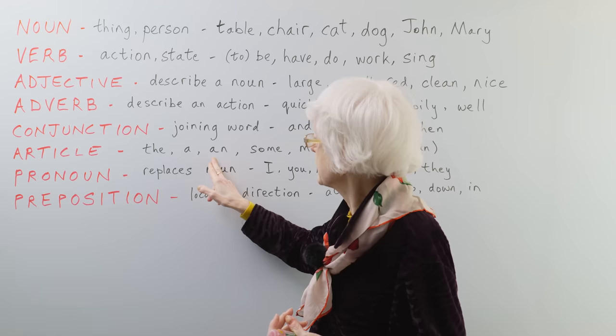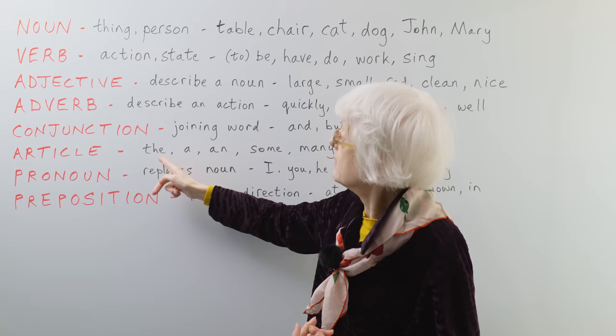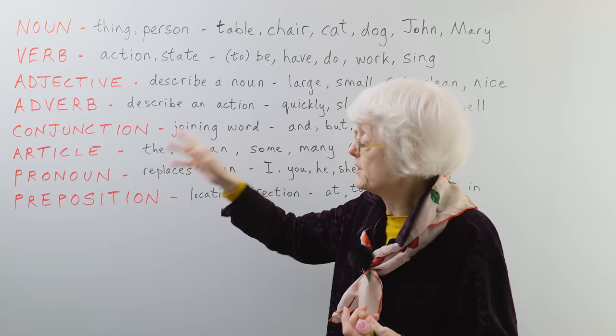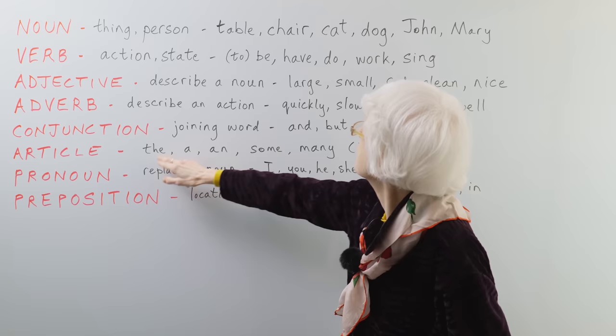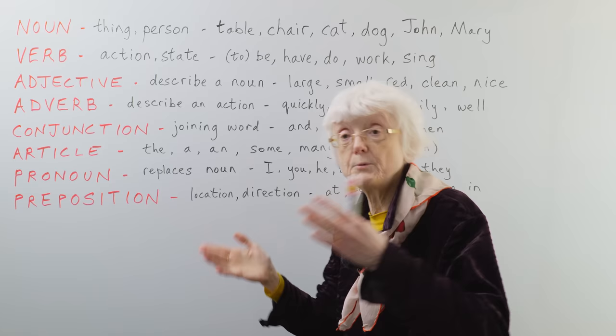That comes in front of, usually, a noun. It could come in front of a noun. It could come first, and then an adjective, and then a noun. The red dog you could have, or just the chair. Sometimes you put the adjective in between the article and the noun.